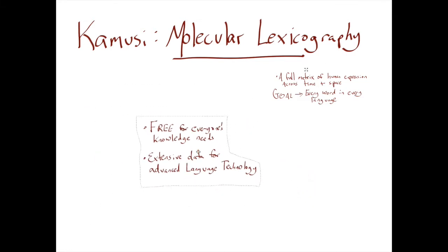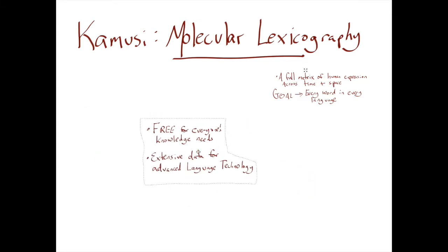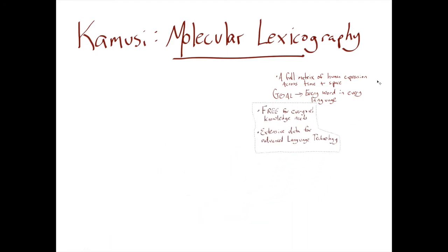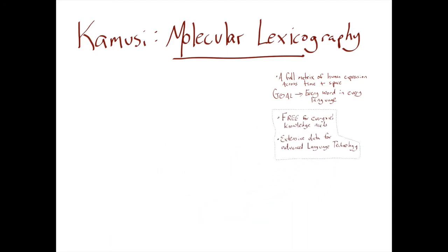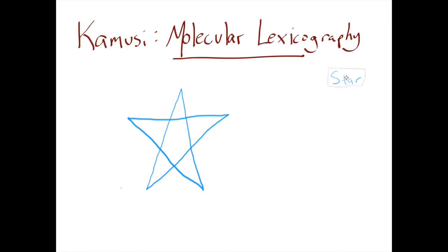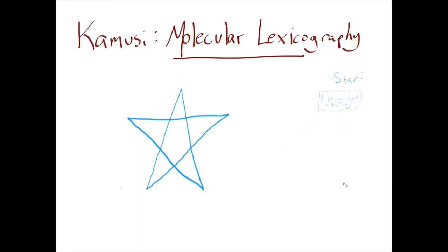I'll briefly compare traditional lexicography — the writing of dictionaries — with what we're talking about with molecular lexicography. Let's look at what we think of as a word, something like 'star', which we'd define as a shining object in the sky. If we start to think about what is a star, we realize quite quickly that there's a lot more depth to it than just this word and the definition.